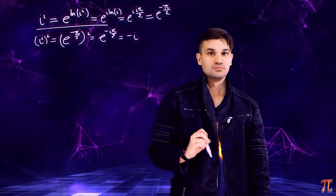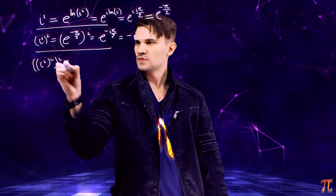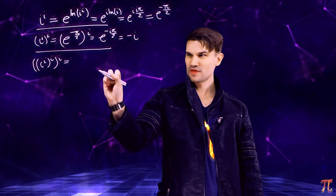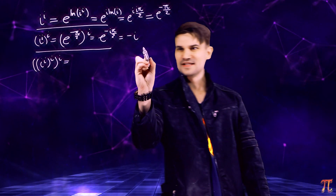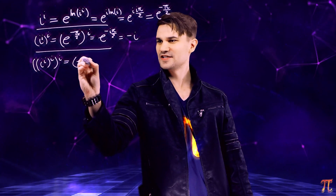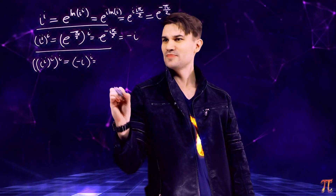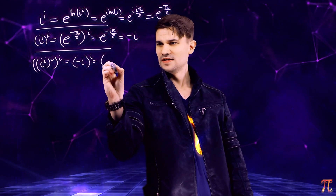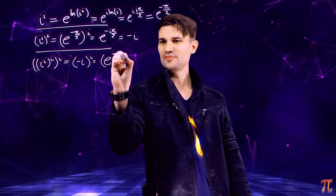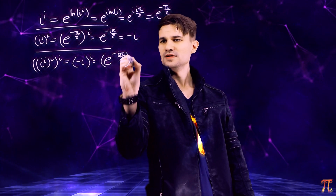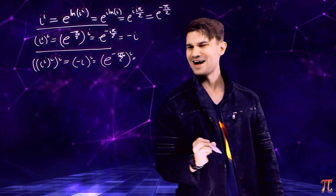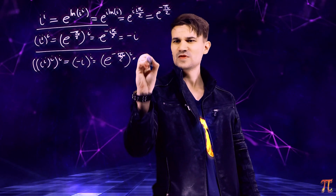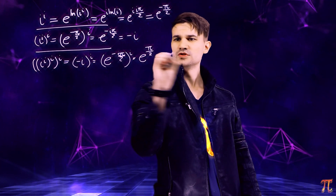All right, let's do it again. What's i to the i to the i to the i? Well, again, we know that i to the i to the i is negative i, so we can write this as negative i to the i. And we know that negative i is e to the negative i pi over 2. So this is e to the negative i pi over 2 to the i. And when we multiply i times i, we get negative 1, and there's already a negative there. So we end up getting e to the pi over 2.